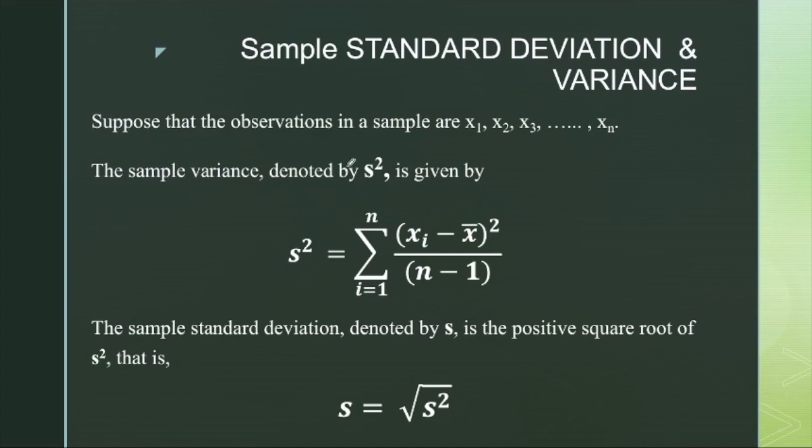To have a single standardized value to represent the spread of the data, the main parameters are standard deviation and variance. First we calculate variance, then from variance we obtain standard deviation. We cannot have a standard deviation by simply subtracting each value with respect to the mean.